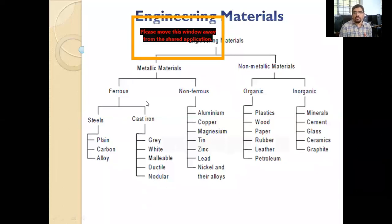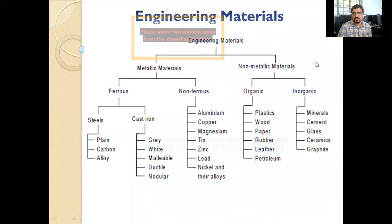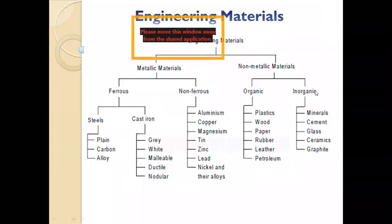Non-metallic materials: organic means those found naturally — like plastics, wood, paper, rubber, leather, and petroleum. Inorganic includes glass, cement, ceramics, and graphite.